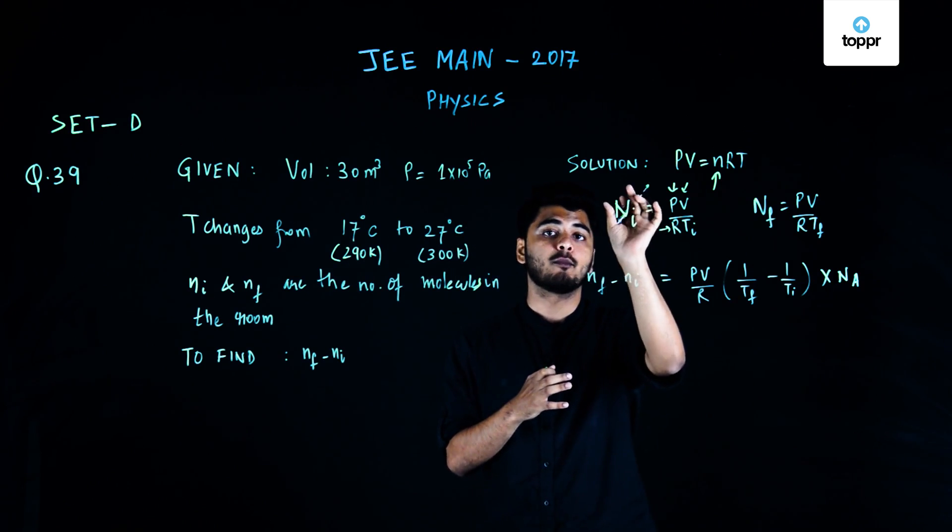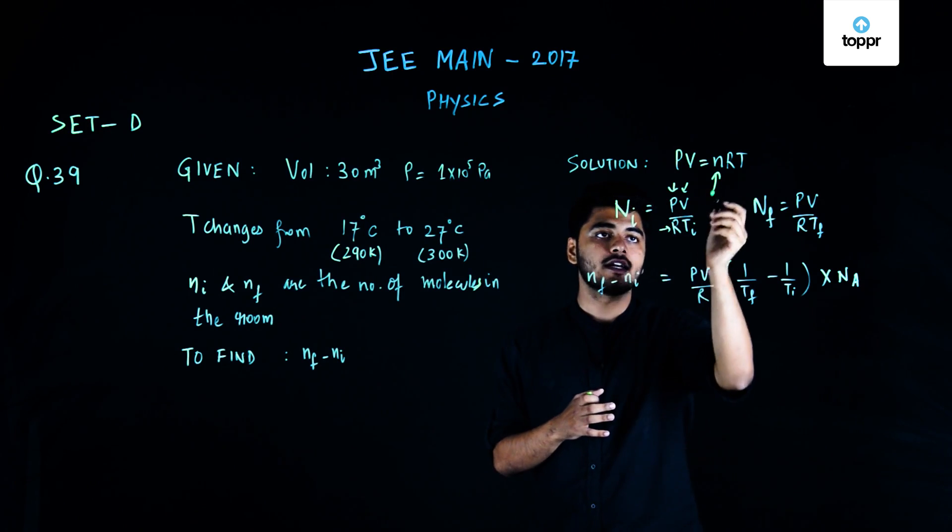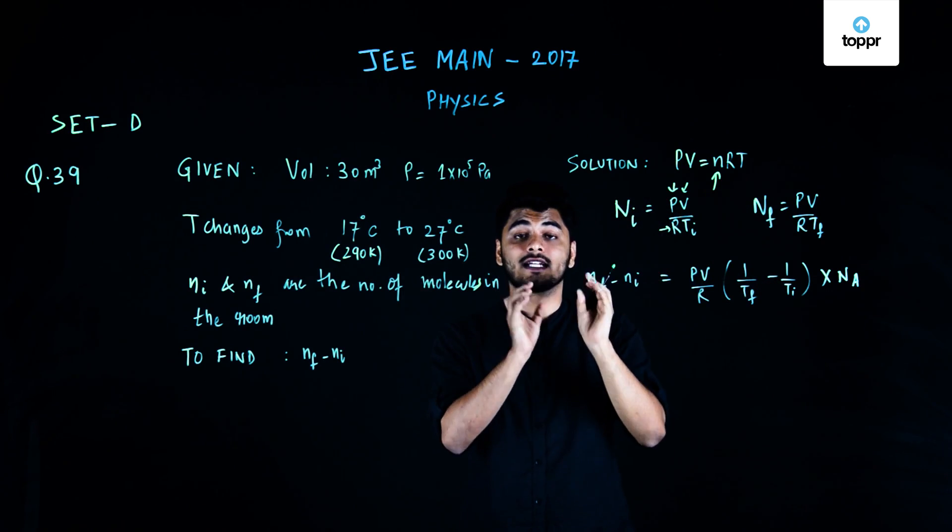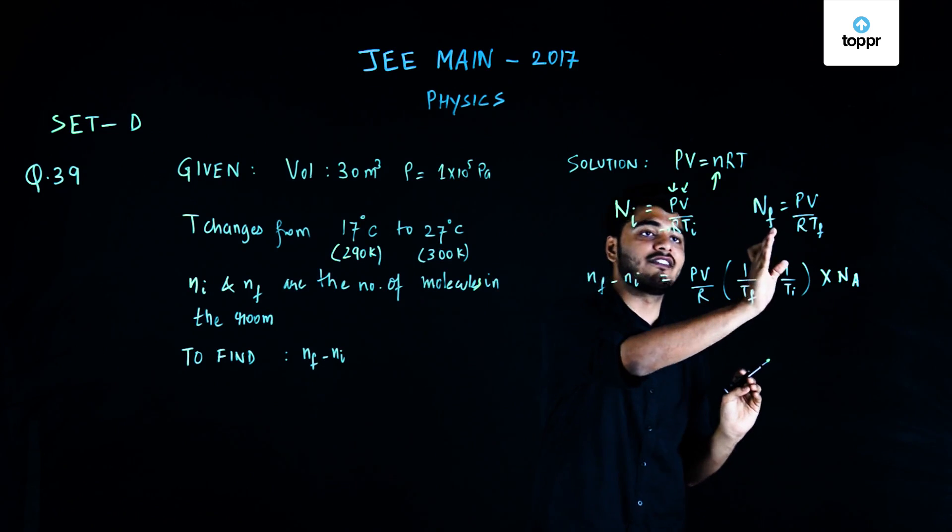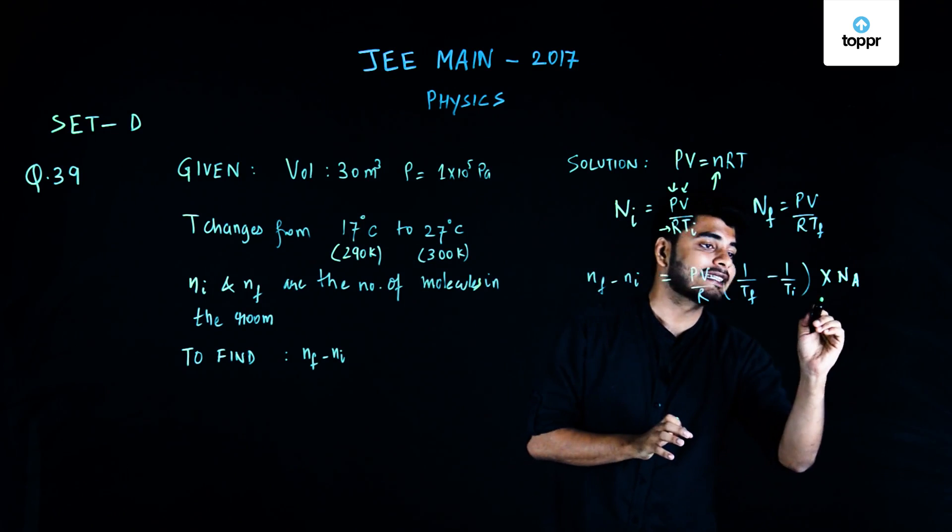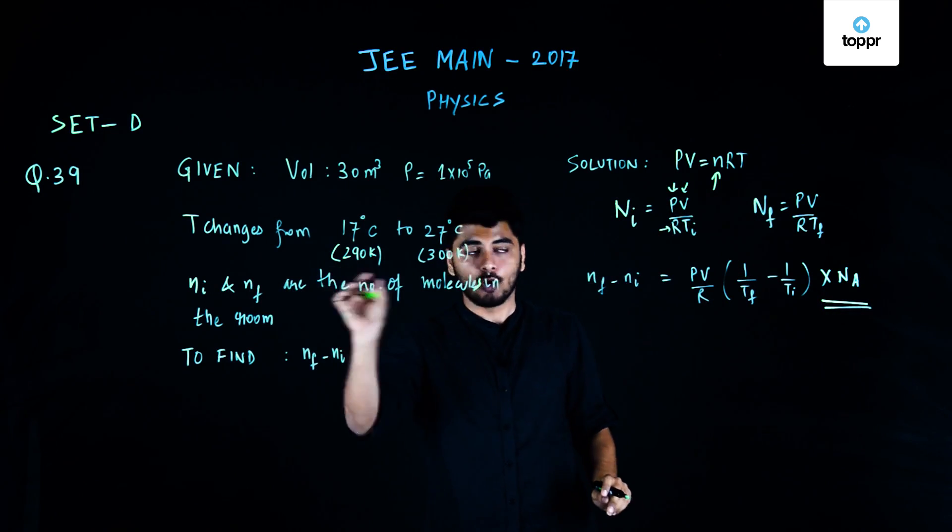So, in order to find the difference between the number of moles of Ni and NF, I can just use PV by R, 1 by Tf minus 1 by Ti, that is equals to the number of moles, the difference between the number of moles in final and initial condition. Once I get that, I'll just multiply the same thing by Avogadro's constant to get the number of molecules.